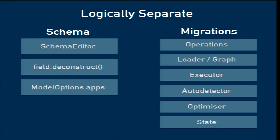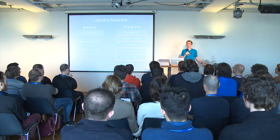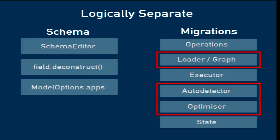What we're going to talk about today is some of the stuff on this side. In particular, I want to cover three things: the loader and the graph, the autodetector, and the optimizer. What migrations is doing internally is making a big digraph — a directed graph — of all migration operations in your project and resolving them into an exact order to run them in. The job of these things is to make that initial graph from what you've done, and then this is the thing that loads those files and runs them in memory.